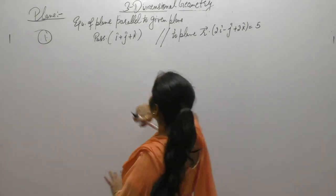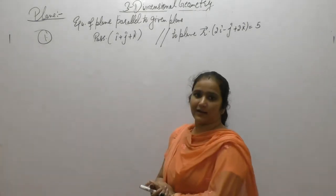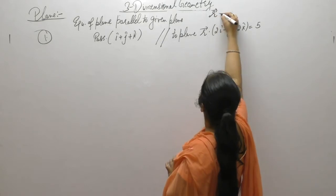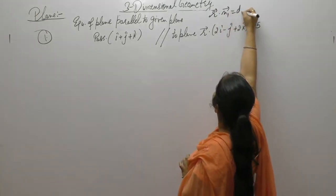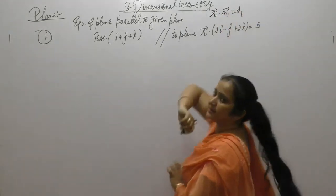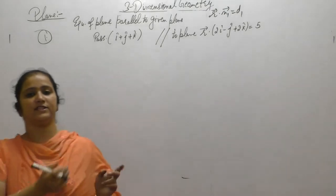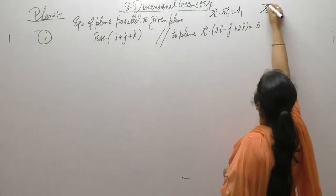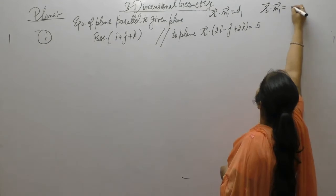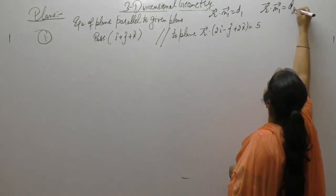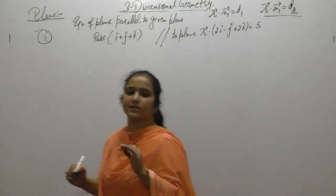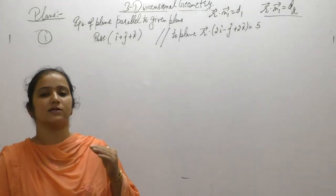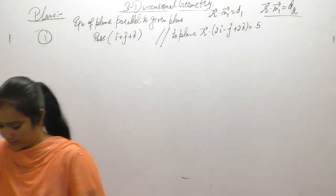When two planes are parallel, the normals are the same. If the first equation of the plane is r dot n equals d1, then the equation of the parallel plane is r dot n equals d2 — only the constant term changes.